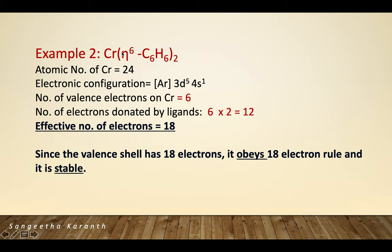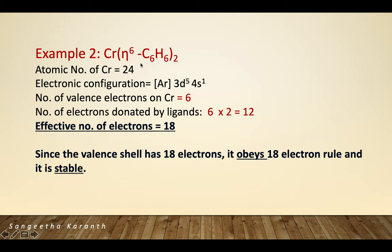Example 2: Cr(η6-benzene)2. The atomic number of chromium is 24, and the number of valence electrons is 6. Each η6-benzene donates 6 electrons; with two benzene ligands, that gives 12. So 6 + 12 = 18. This complex obeys the 18 electron rule and is thermodynamically stable.